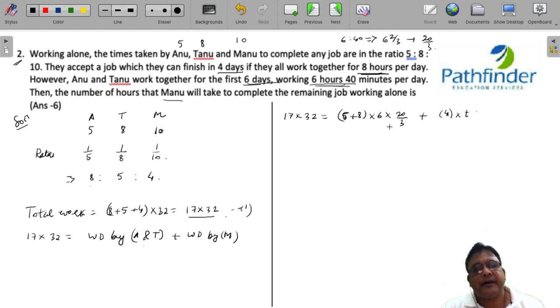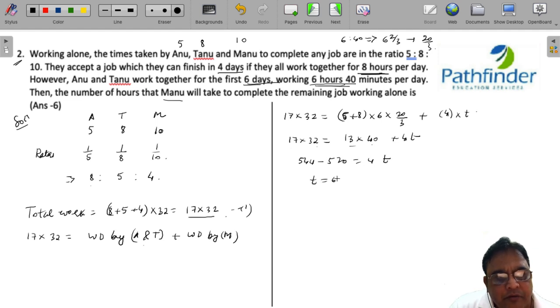So what does that give you? 17 multiplied by 32 is equal to 13 multiplied by 40 plus 4 times t. 17 multiplied by 32 is 544 minus 13 multiplied by 40 is 520, is 4 times t, which means t must be equal to 6 hours, which is your answer.